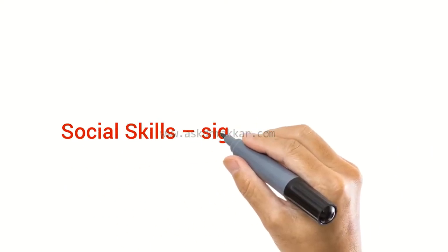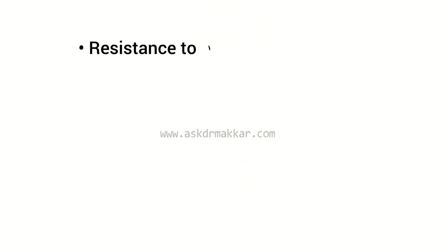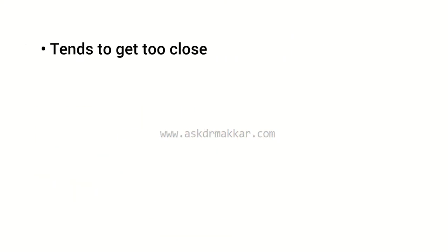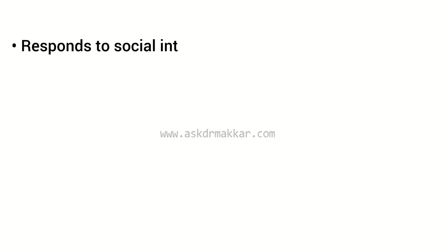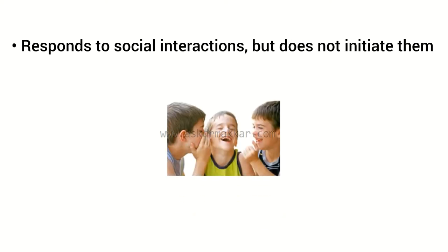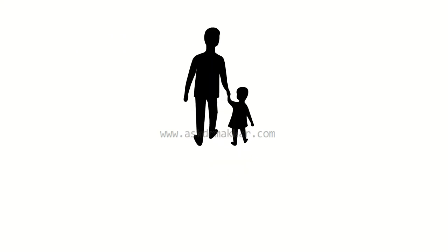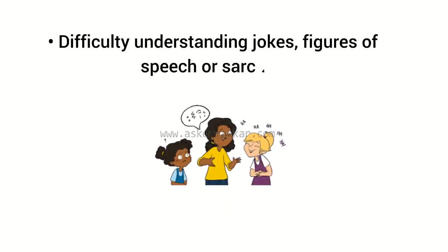Social skills signs and symptoms: very little or no eye contact; resistance to being held or touched; tends to get too close when speaking to someone, lack of personal space; responds to social interactions but does not initiate them; does not generally share observations or experiences with others; difficulty understanding jokes, figures of speech, or sarcasm.